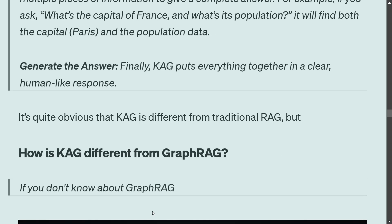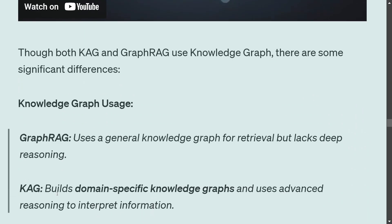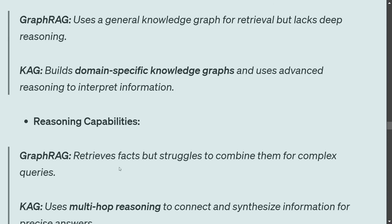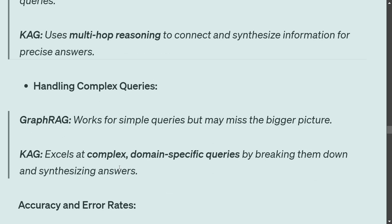CAG is very different from traditional RAG because traditional RAG doesn't use knowledge graphs. The question is how it differs from graph RAG. Though both architectures use knowledge graphs, they do so in very different ways. Graph RAG uses knowledge graphs but lacks deep reasoning; CAG builds domain-specific knowledge graphs and uses advanced reasoning. Graph RAG retrieves facts but struggles to combine them for complex queries, whereas CAG uses multi-hop reasoning to connect and synthesize information.